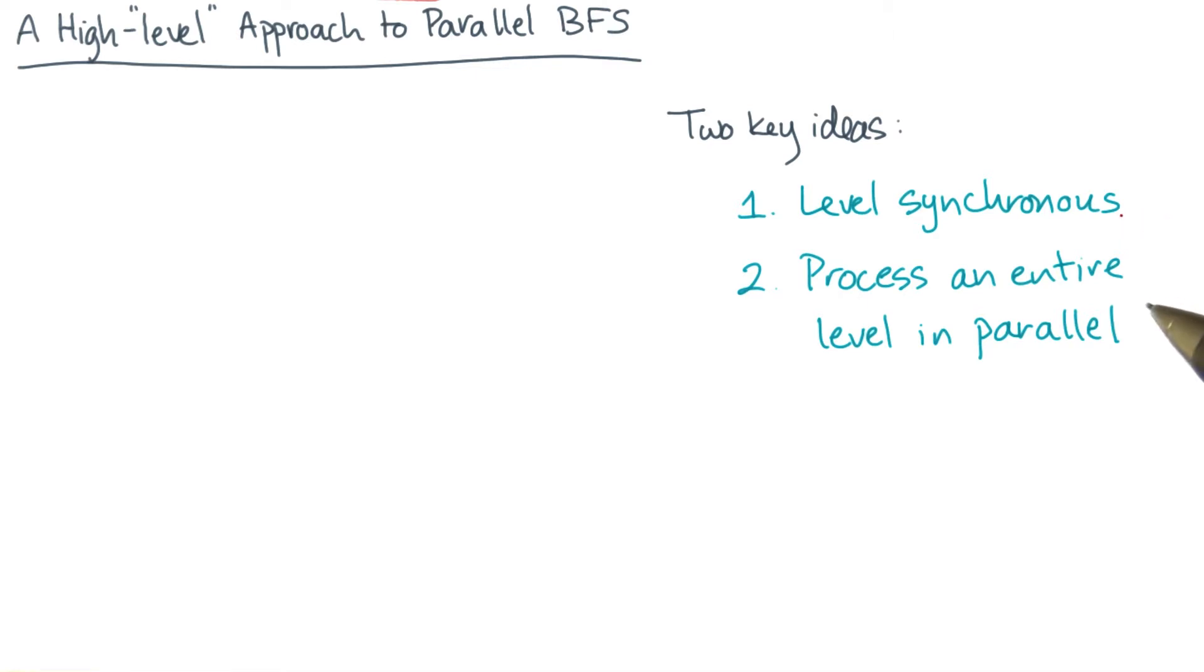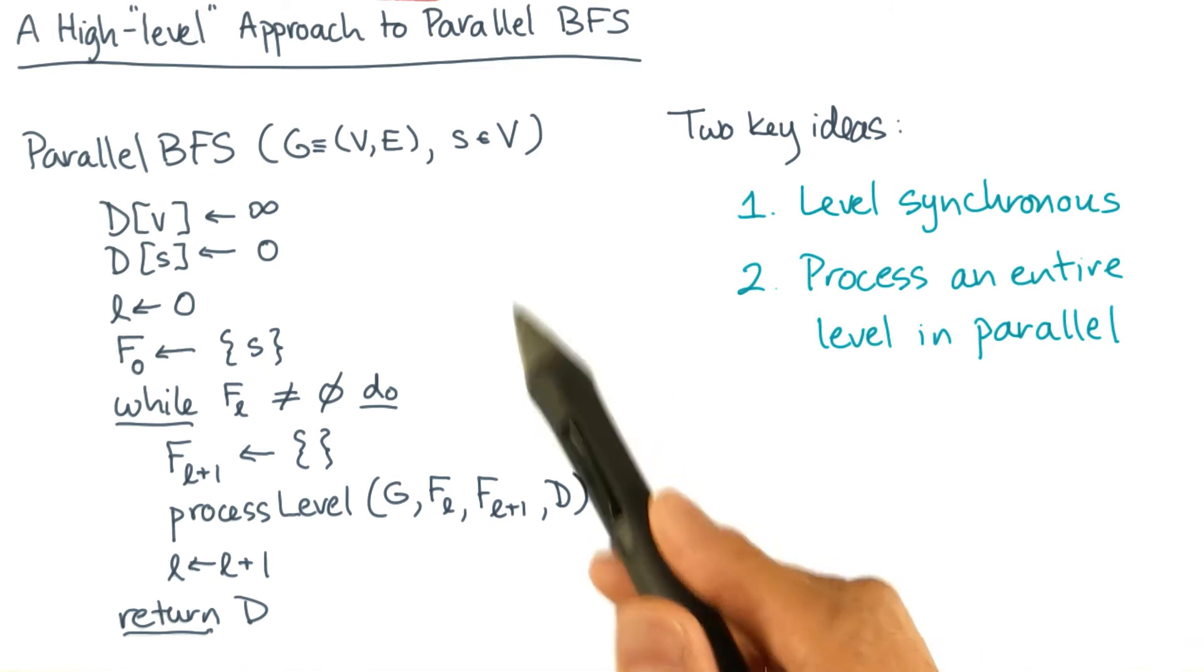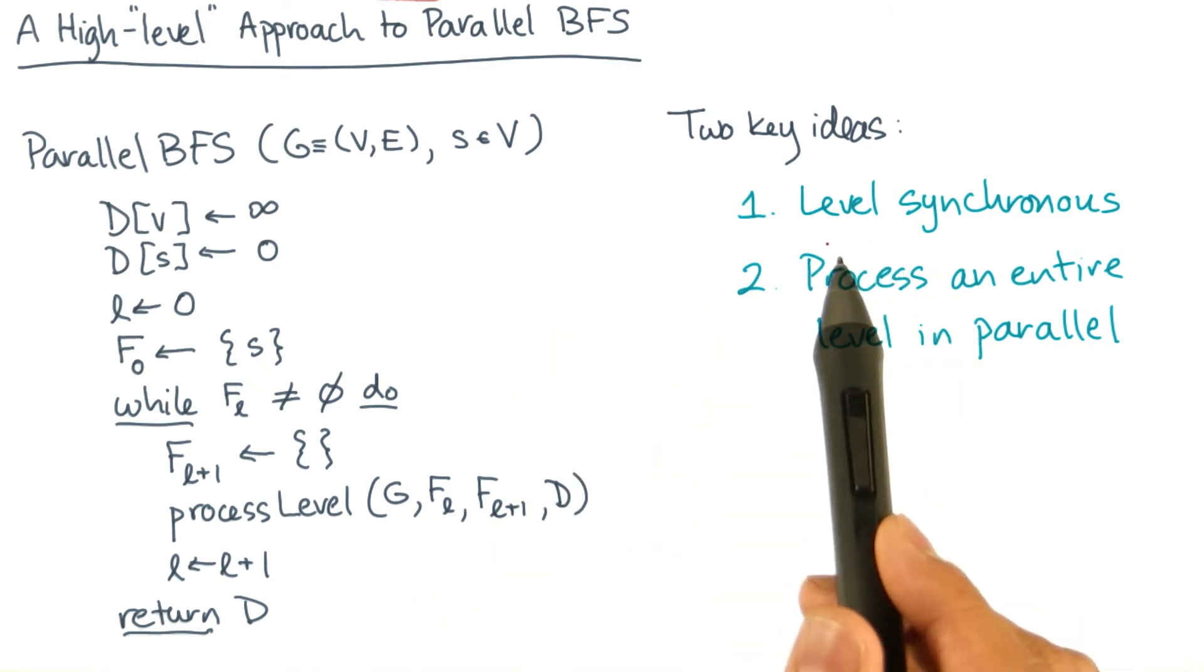Secondly, you should process an entire level in parallel. So remember, why does this work? Essentially, you perform the same action on every vertex of the level, so the order in which you visit those vertices shouldn't matter. So here's a high-level pseudocode that embodies these two big ideas.